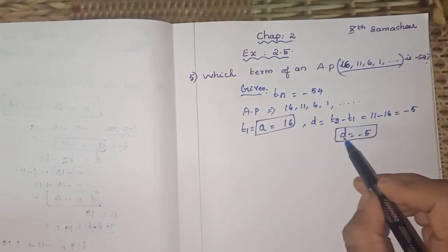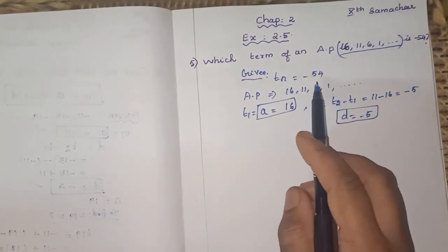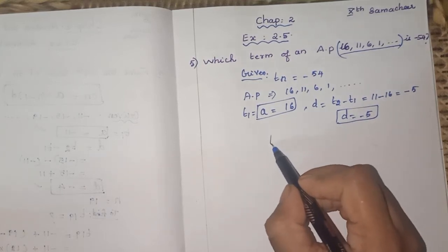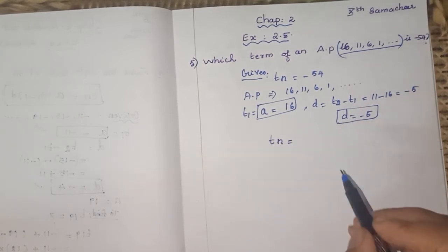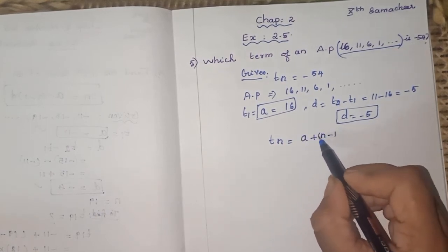So our A is 16 and our D is minus 5. These are the data enough to find the n because T_n is minus 54. It is given. What is the formula for T_n to find the nth term of an AP? It is A plus (n minus 1) into D.